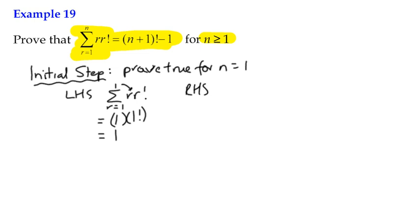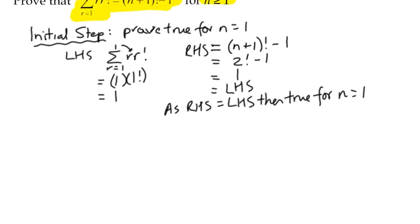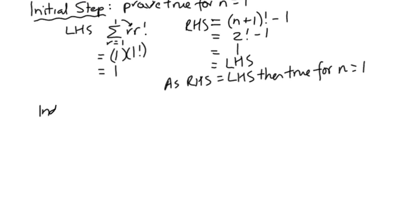The right-hand side, substitute into the formula, we'll get (n+1)! - 1, so therefore that becomes 2! - 1, which is just 1, which is the left-hand side. We can see as the right-hand side equals the left-hand side, then the conjecture is true for n=1. That's important—that's just put up the first domino. To stack the rest of them behind, the second thing is we're going to create our inductive step.